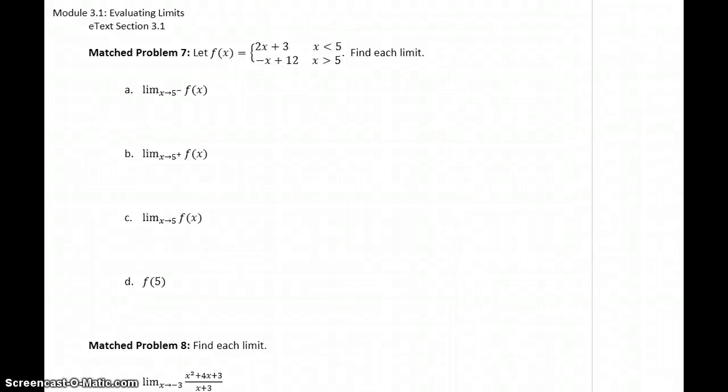In match problem seven, we have a new case to consider. We're dealing with a piecewise function. A piecewise function has different definitions—here either 2x plus 3 or negative x plus 12—depending on different values of x. If x is less than 5 or if x is greater than 5, the definition for this function changes.